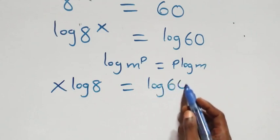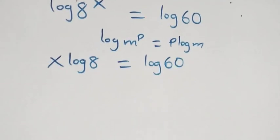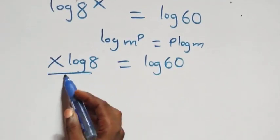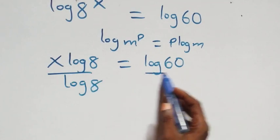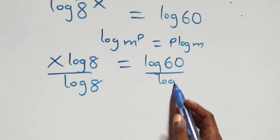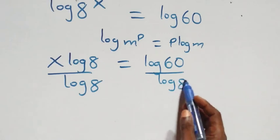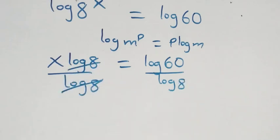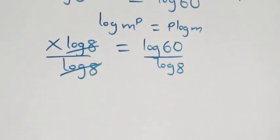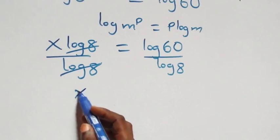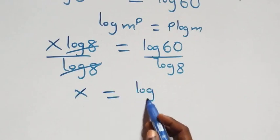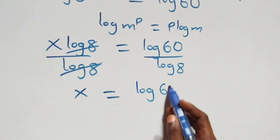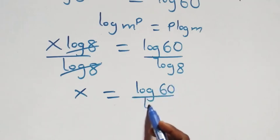From here we divide both sides by log eight. Log eight cancels each other and we are left with x equals to log sixty over log eight.